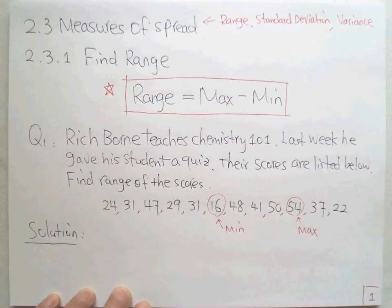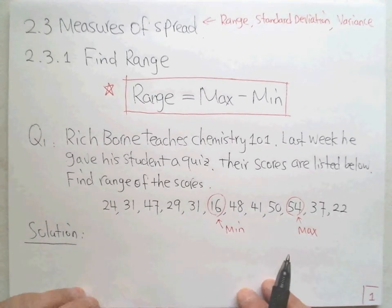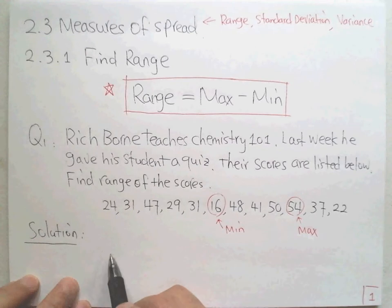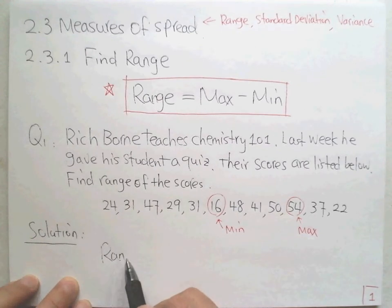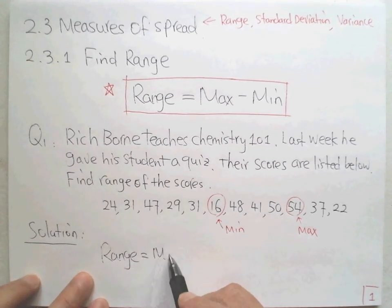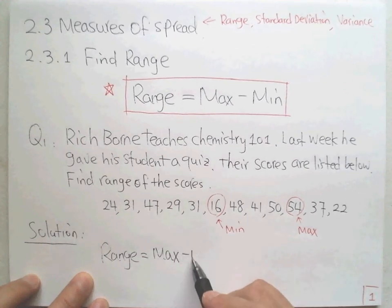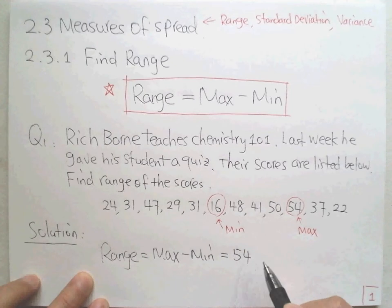And then follow the definition. So the range should equal the maximum minus the minimum. So the maximum is 54, right?